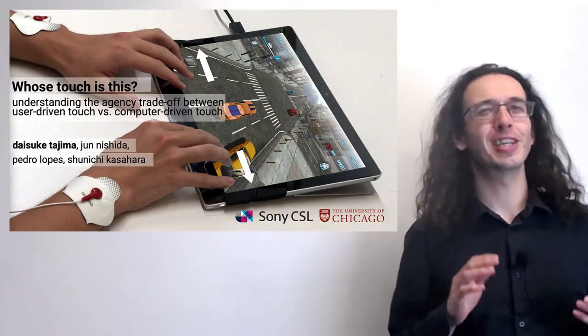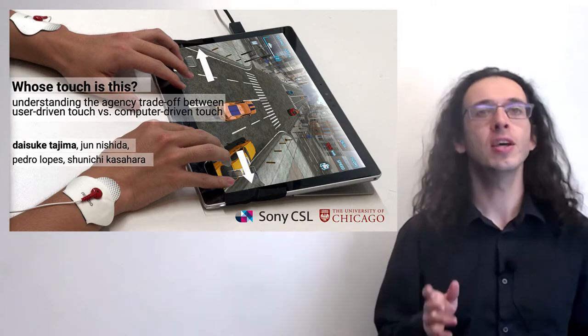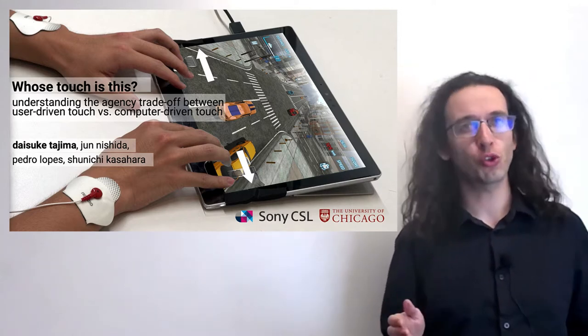Hi, my name is Pedro Lopez and it is my pleasure to present our CHI paper, Whose Touch Is This?, where we investigated the agency trade-off between touch gestures that are voluntarily performed by a user and touch gestures that are originated from a haptic device that controls the user's muscles.